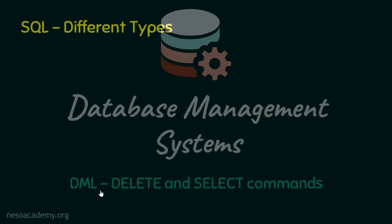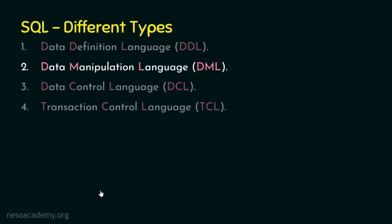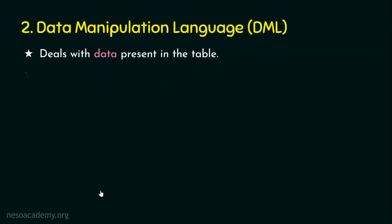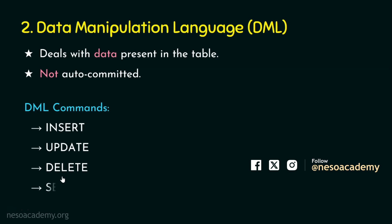We know SQL has four different sub-languages: DDL, DML, DCL and TCL. We are now in DML. We have already seen the theoretical aspects of DML elaborately in previous lectures. Basically, DML has four commands: insert, update, delete and select. We have already seen insert and update in the previous lecture. Now let's focus on the delete command.